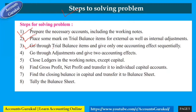Fourth step: go through adjustments and apply two accounting effects for each. It is essential to remember that each adjustment requires both a debit and credit effect. If only one effect of an adjustment is considered, the balance sheet will not tally. Fifth step: close ledgers prepared in working notes except the capital accounts.